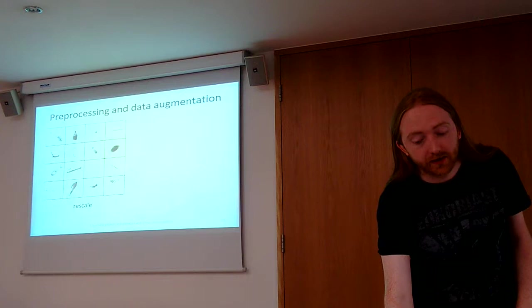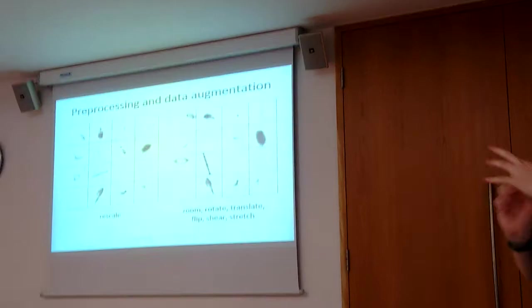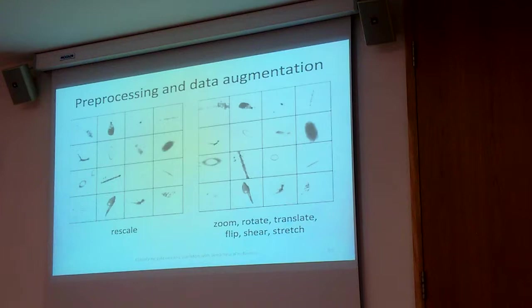Again, preprocessing and data augmentation was sort of the same as before. The main difference is that we actually started by rescaling all the images to be the same size, because it's nice if you can feed the same size images to a ConvNet. So we're actually throwing away a little bit of information here, and I'll explain in a bit how we get that back in there. And then the augmentation is the same as before - zooming, rotation, translation, flipping, shearing, and stretching.